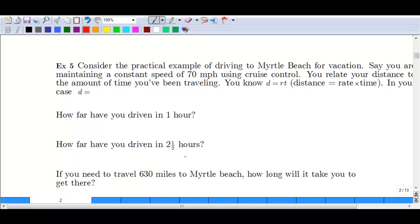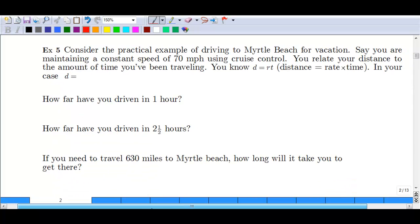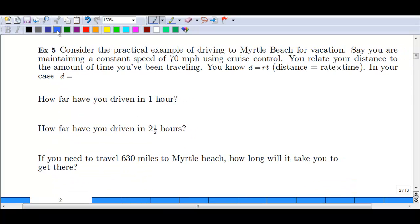Last thing here, let's consider a practical example of driving to Myrtle Beach. Say you're going on summer vacation. You're maintaining a constant speed of about 70 miles per hour using cruise control. You relate your distance to the amount of time you've been traveling. We know that distance equals rate times time. In this case, our rate is 70. And at any given time T, we could find out how far we had gone.